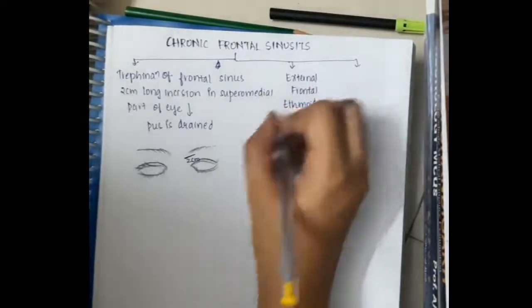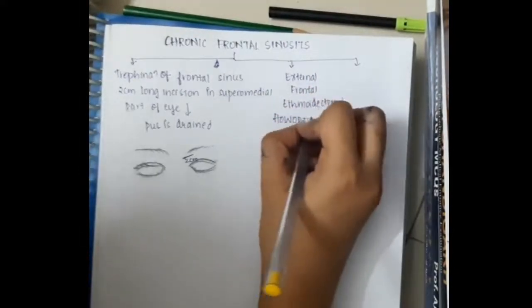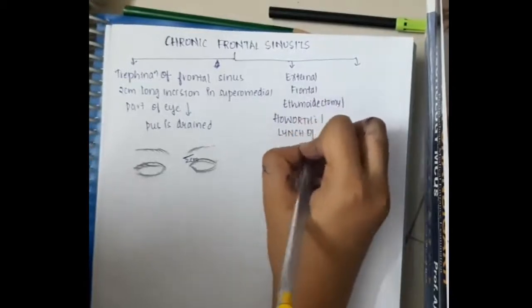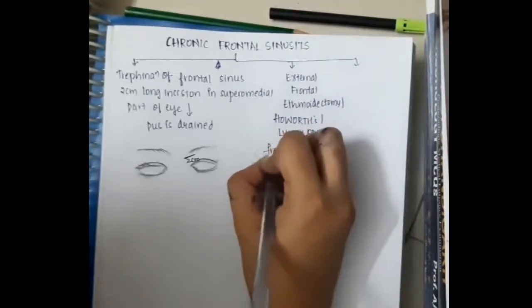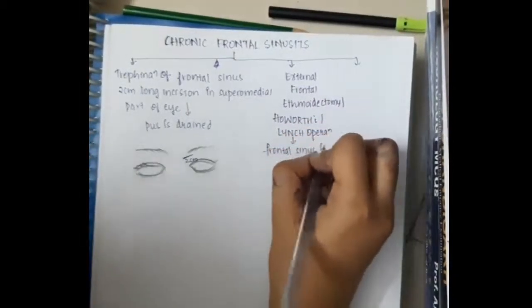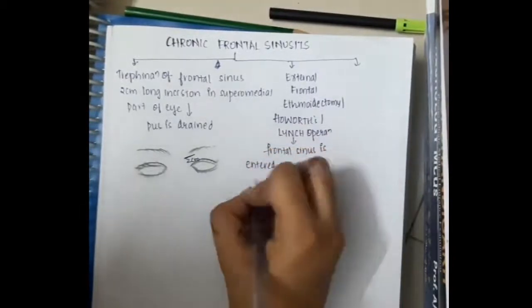Next, external frontal ethmoidectomy or Haworth-Jansen operation can be done. Here, frontal sinus is entered via the inner margin of the orbit, that is Haworth-Jansen operation.